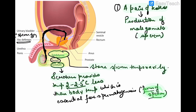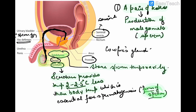Apart from this, there are three accessory male reproductive glands: the seminal vesicle, the prostate gland, and Cowper's gland. The seminal vesicle produces seminal plasma, which along with sperm forms the semen.